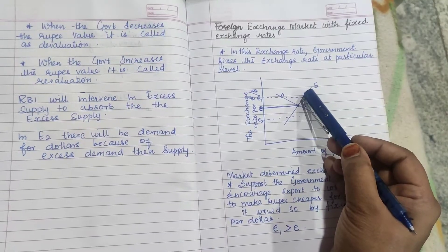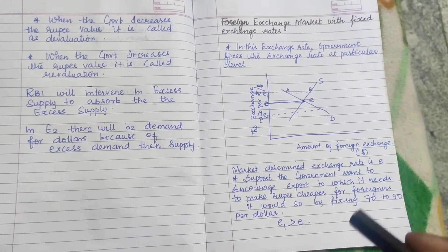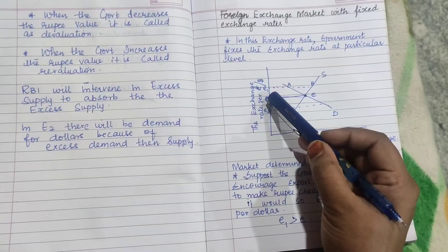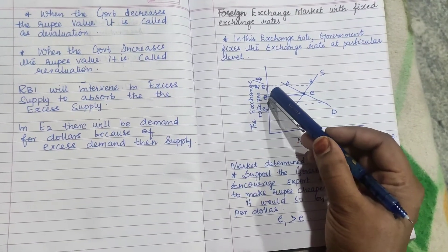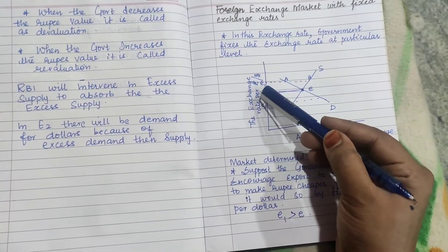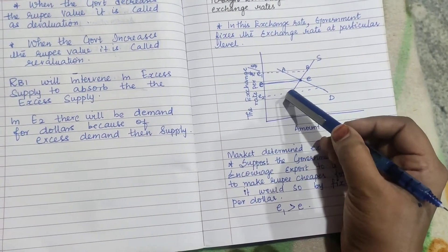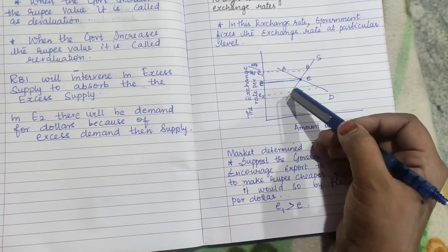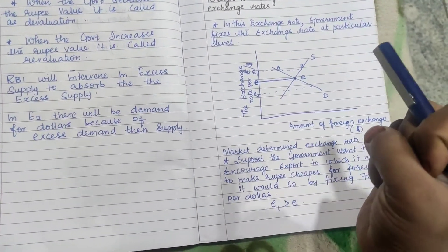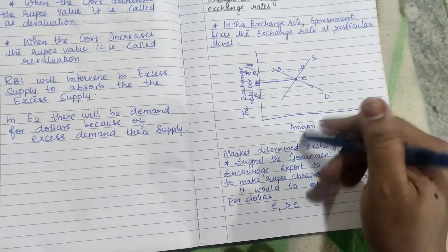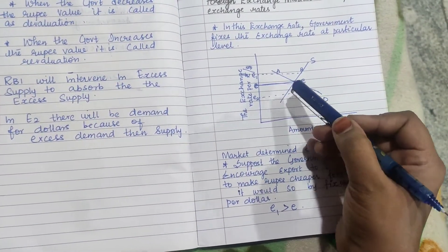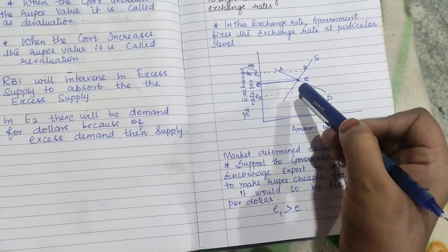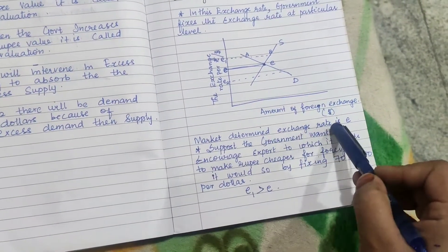On the other hand, if the government wants to increase imports, the equilibrium shifts from E to E2. At E2, the supply of dollars is very less compared to demand. The money held in reserves also comes into supply because the demand for dollars is very high compared to the supply.